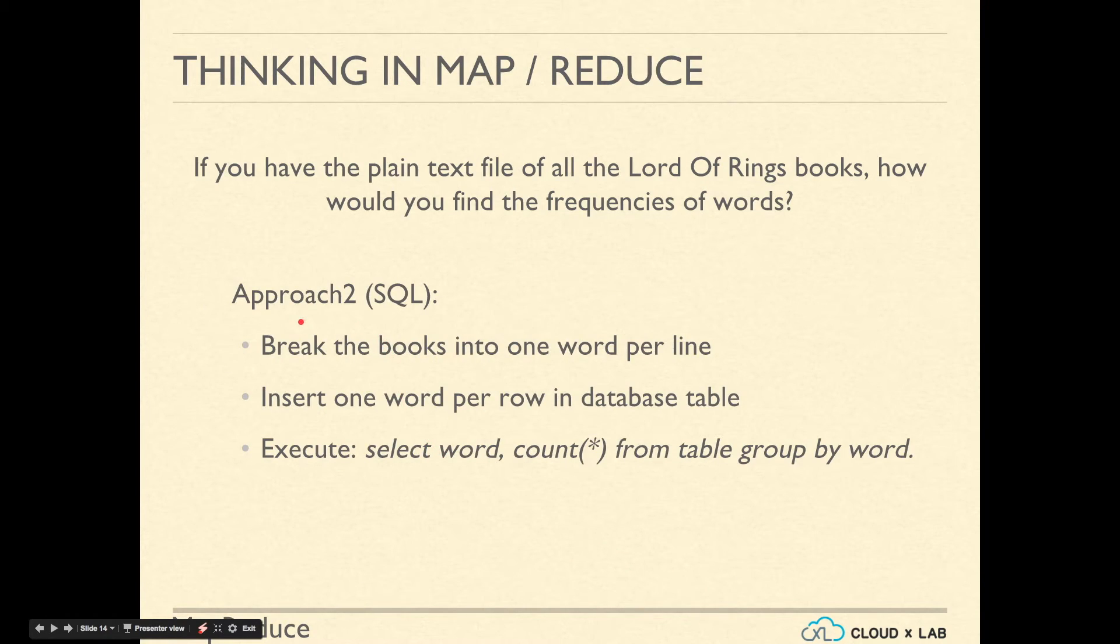Second approach is to use SQL. Basically, break down the text from all these files into one word per line. And then insert each word into a row in the table with a single column. Once such table with one column has been created, we execute an SQL query with group by clause like select word comma count star from table group by word.